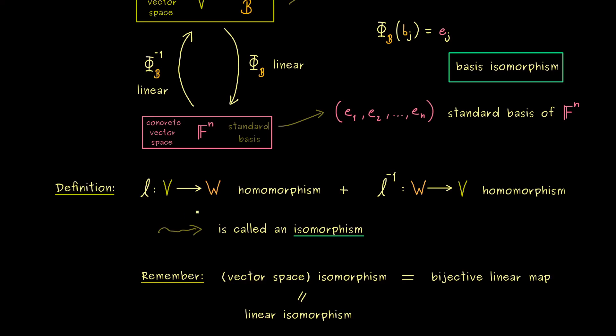So you could say, both vector spaces are essentially the same. And we can always decode back and forth by using our isomorphism.